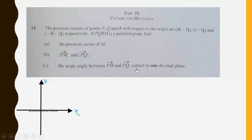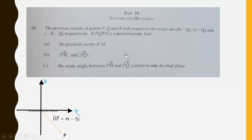To see a clear picture you need to plot all the vectors. To plot 4i − 5j, move 4 units in the i-direction and −5 units in the j-direction, giving vector OP. To plot i + 3j, move 1 unit in the i-direction and 3 units in the j-direction, giving vector OQ. To plot −5i + 2j, move −5 units in the i-direction and 2 units in the j-direction, giving vector OR.